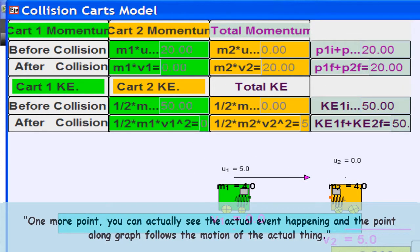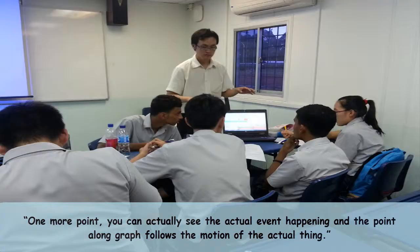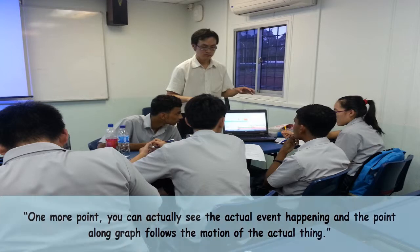One more point, you can actually see the actual event happening. And then the point along the graph, it follows the motion of the actual thing.